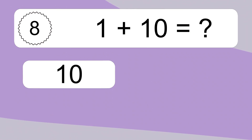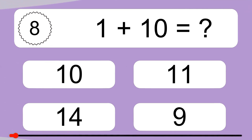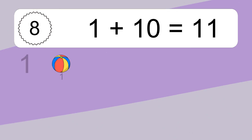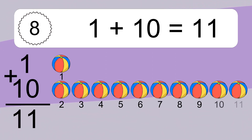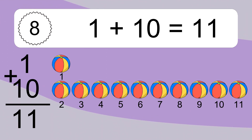1 plus 10 equals what? 1 plus 10 equals 11. Let's count it. 1, 2, 3, 4, 5, 6, 7, 8, 9, 10, 11.